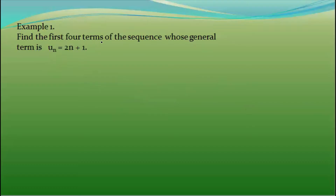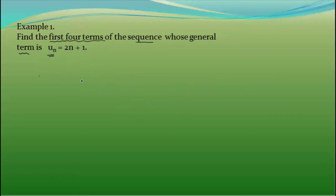Now let's look at example one. Find the first four terms of the sequence whose general term is UN. The UN formula gives the first four terms: U1, U2, U3, U4. UN is equal to 2N plus 1.